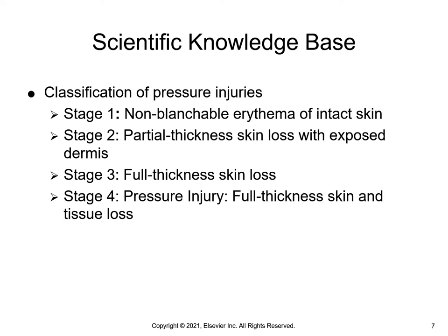A stage two pressure injury is a partial thickness skin loss with exposed dermis. The wound bed is viable, pink or red in color, and moist. It may also be an intact or ruptured serum fluid-filled blister. Adipose tissue and deeper tissues are not visible.